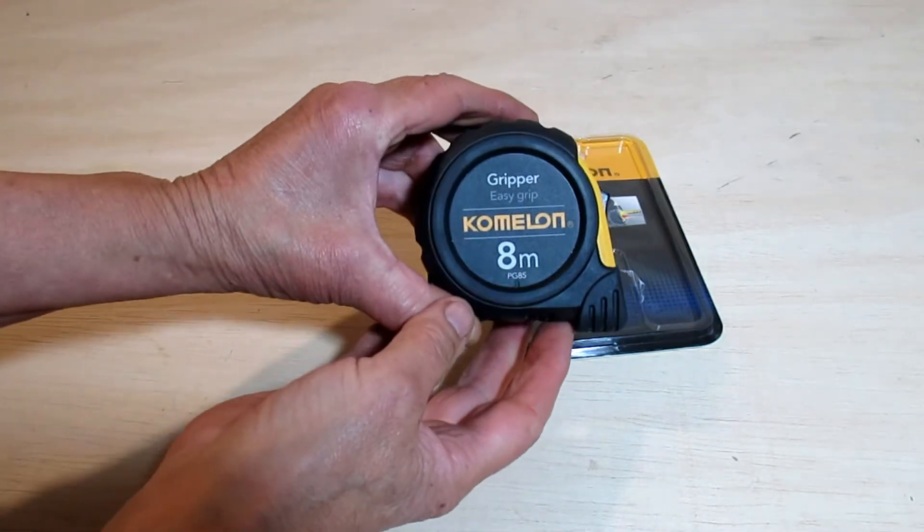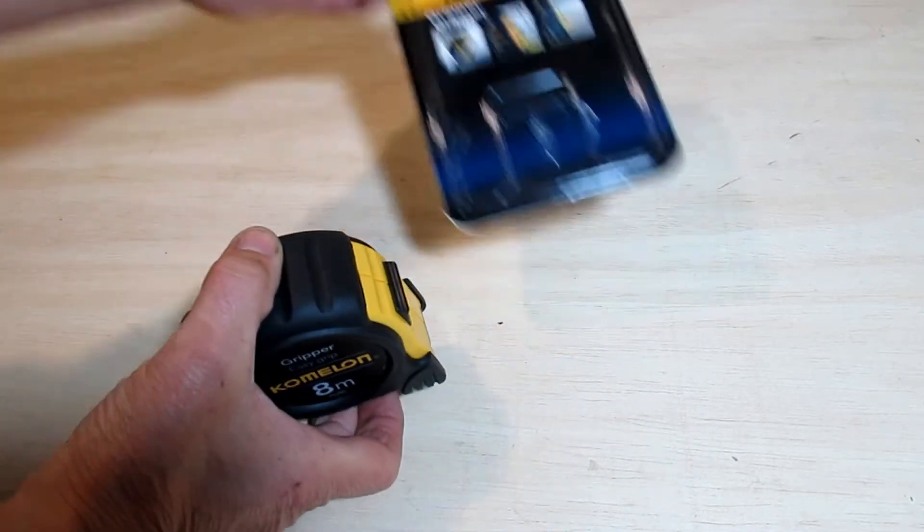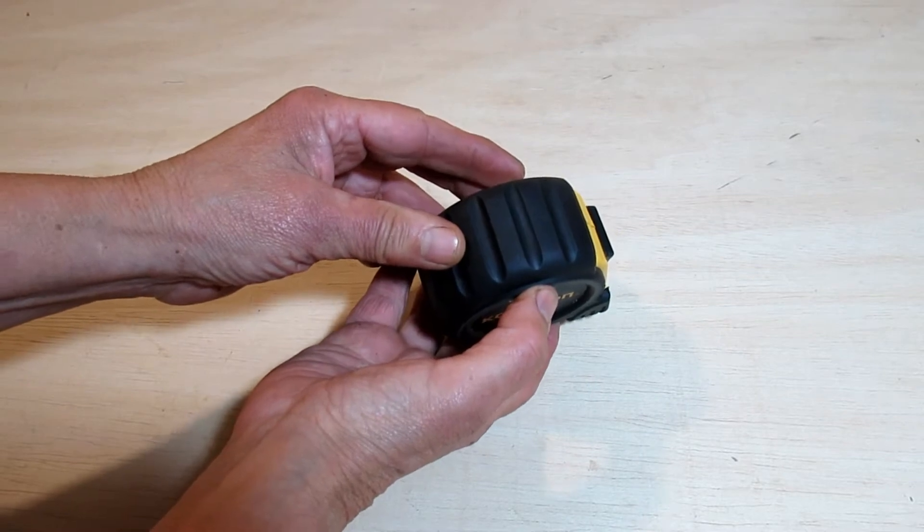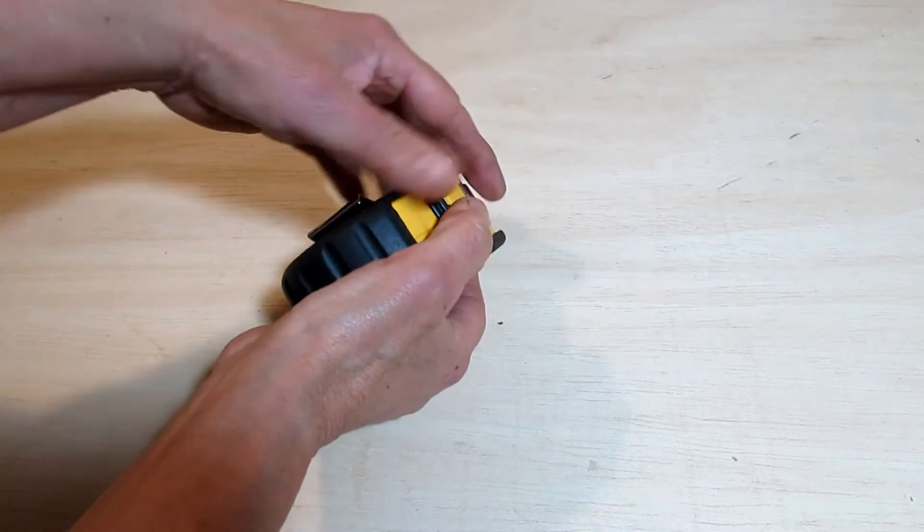It's made by a company called Kamalon. It's made in Korea. Here's the packaging. It's got an easy-grip outer cover. It's a little bit wider than a Stanley FatMax, has a belt clip and locking blade.